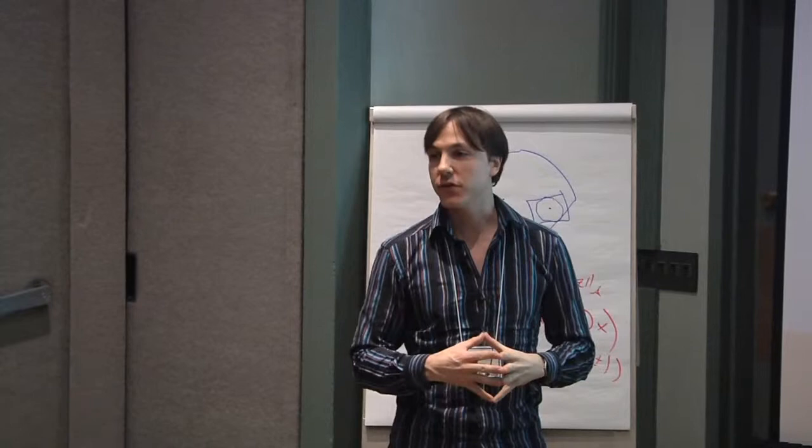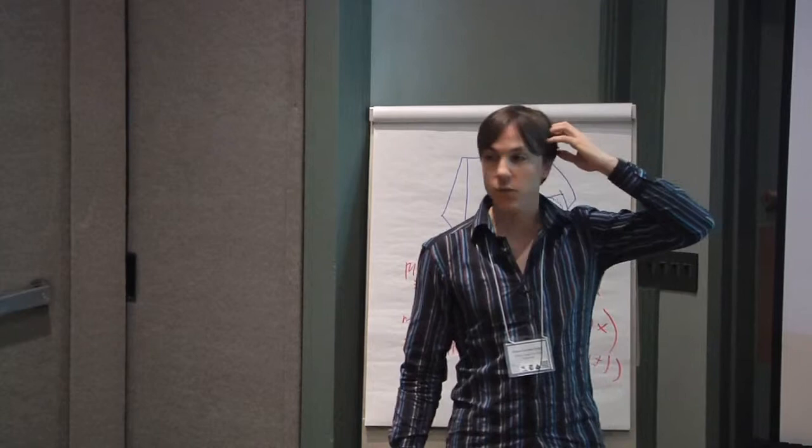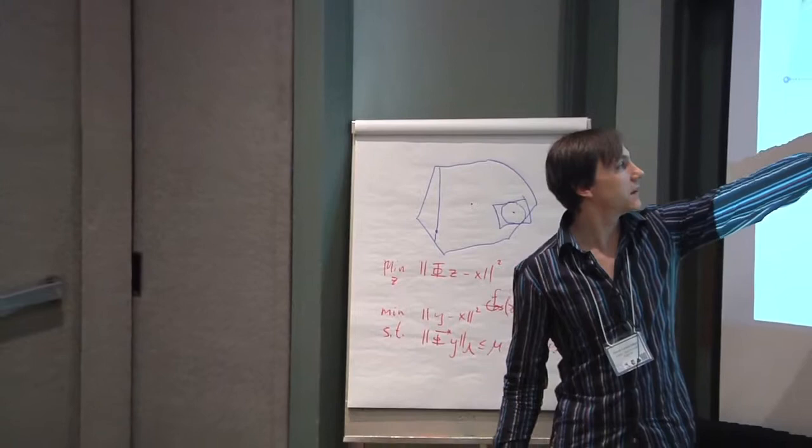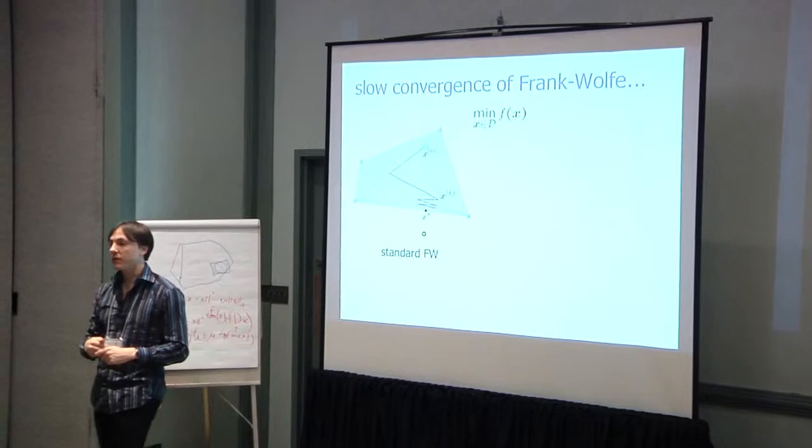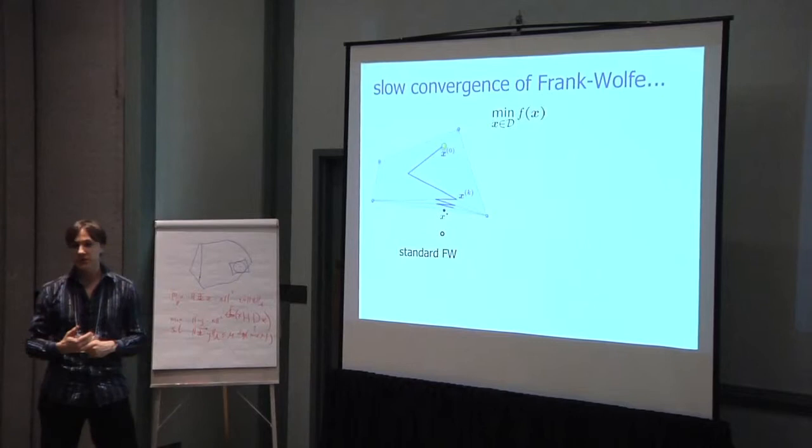So this is the standard Frank-Wolfe algorithm. It's known to converge very slowly when the solution is at the boundary of the polytope, because the standard Frank-Wolfe algorithm takes steps which are towards the corners. When the solution is at the boundary, as it gets close to the solution, it will start to zigzag. In particular, the direction in which Frank-Wolfe will go will make an inner product of almost zero with the gradient. And that's why you get sublinear convergence rate.